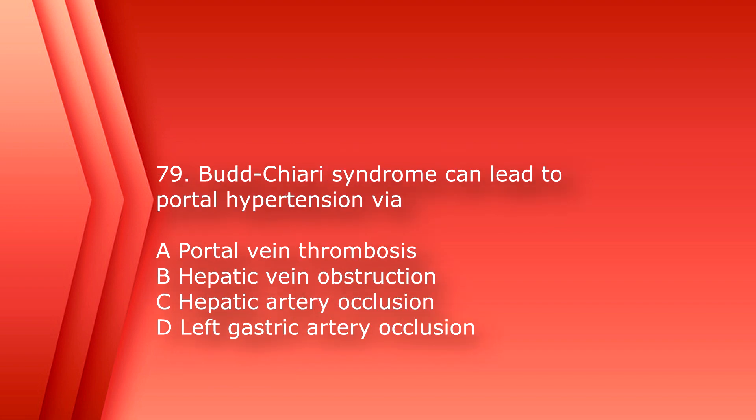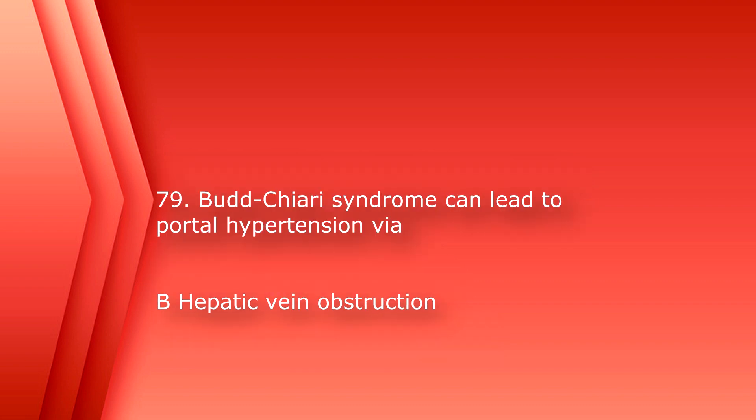Number 79: Budd-Chiari syndrome can lead to portal hypertension via A. Portal vein thrombosis. B. Hepatic vein obstruction. C. Hepatic artery occlusion. Or D. Left gastric artery occlusion. The answer is B. Hepatic vein obstruction.